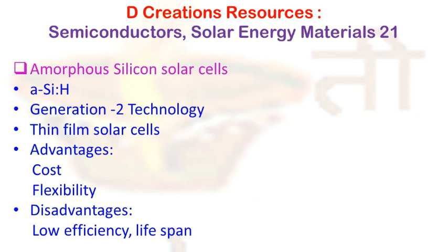Since the process is plasma-induced dissociation, it is also called PE-CVD. The main points to remember about amorphous silicon solar cells: they are thin-film cells belonging to the second generation, since the first generation is wafer-based crystalline silicon technology. Being amorphous in nature, the atoms are arranged randomly.